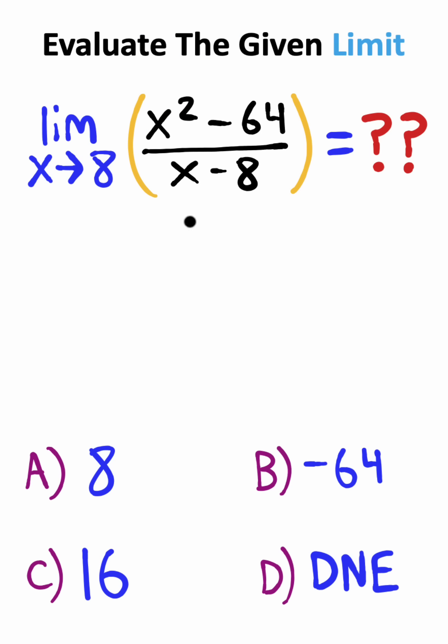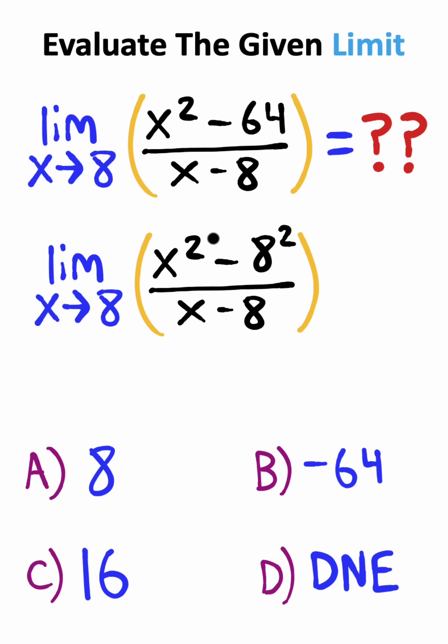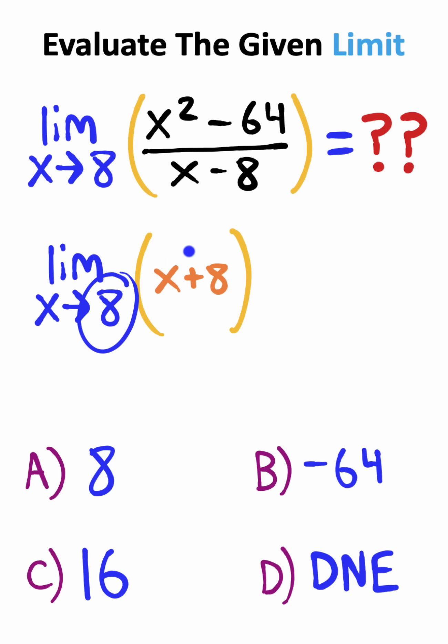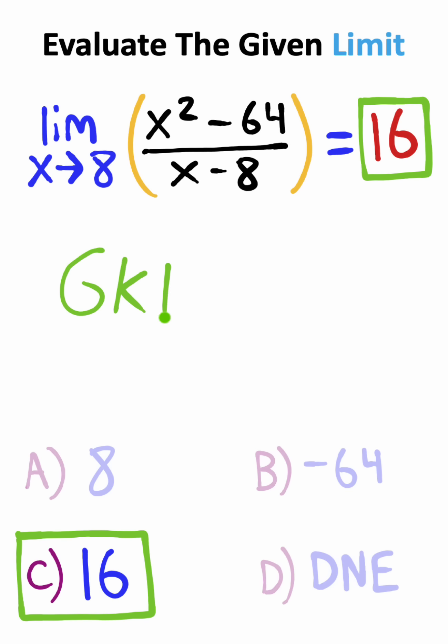Now moving on to our last question, we need to evaluate this limit. x squared minus 64 is the same thing as x squared minus 8 squared. This is a difference in squares which can be factored. I can go ahead and cancel the x minus 8 term, and from here I can just take this 8 and plug it in. 8 plus 8 is 16, so of the 4 options below, the correct answer is option C.